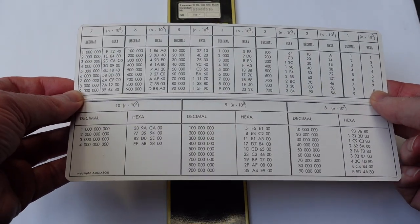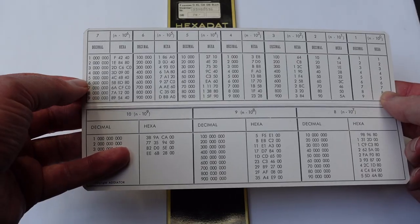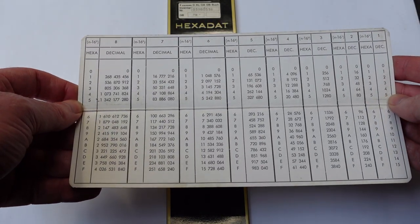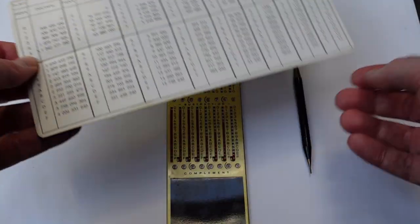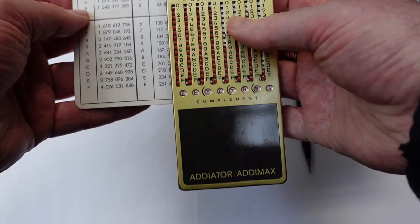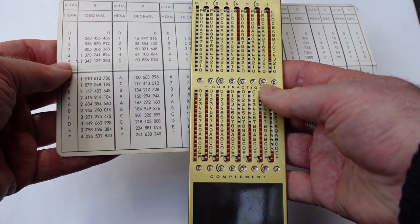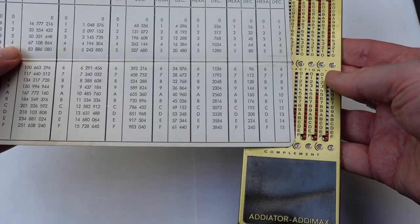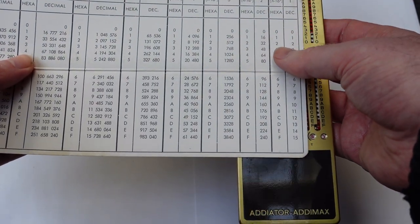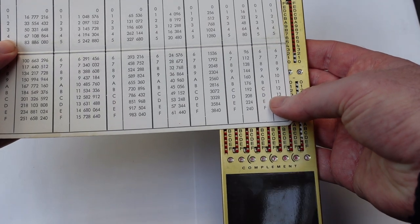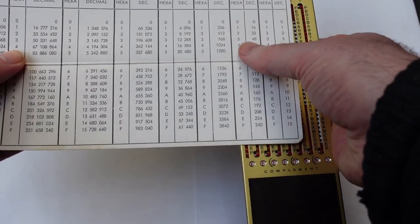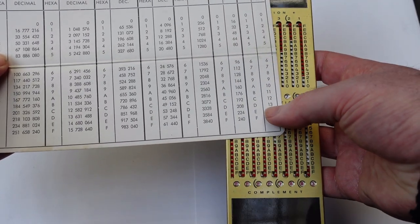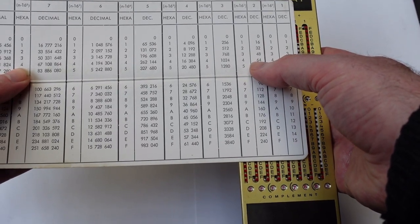This table is used for converting numbers from decimal to hexadecimal and vice versa. So for example, if I wanted to convert this number to decimal, I'd simply look up each of these digits in these columns. So the last column is D. I can look up here in this column what D is, and that means 13. In the next column it's a 4, so that is 64 in value. So I'd have to add 13 and 64. That's 77.